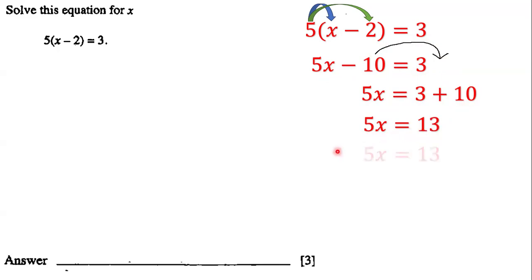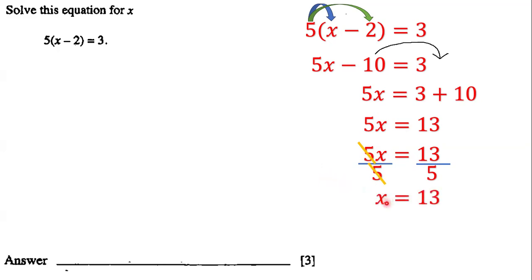So we have five x is equal to thirteen. Next, we're going to divide both sides of this equation by the coefficient of x, which is five. Notice that this five cancels with this five, so on the left hand side we're left with x, and on the right hand side we are left with thirteen divided by five.